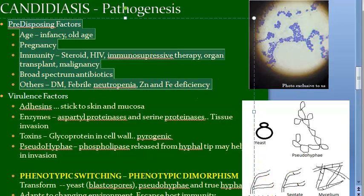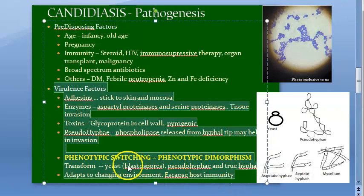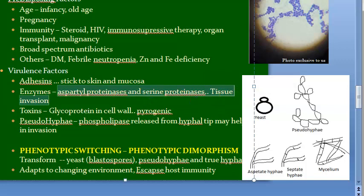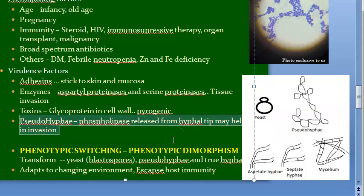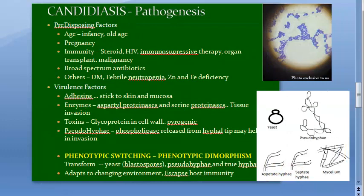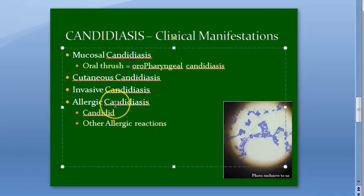Virulence factors for Candida include adhesins that help it stick to skin and mucosa; enzymes like aspartyl proteinases and serine proteinases that aid tissue invasion; toxins like pyrogenic glycoproteins in the cell wall; and phospholipase released from hyphal tips. Candida also undergoes phenotypic switching between yeast, pseudo hyphae, and true hyphae forms, allowing it to escape host immunity. This is why candidiasis is the most common fungal infection.